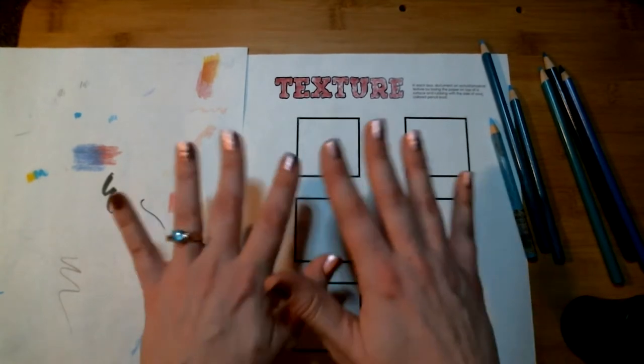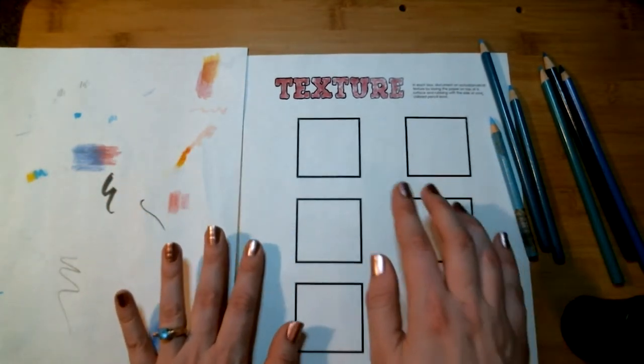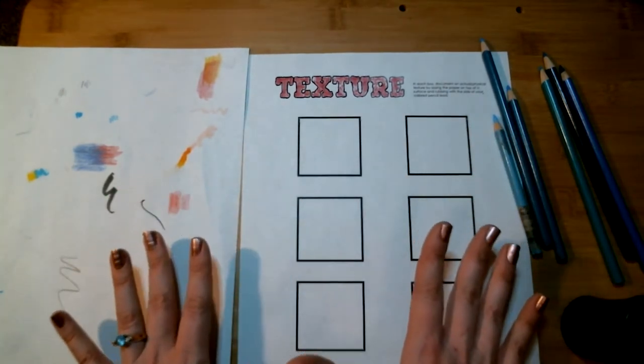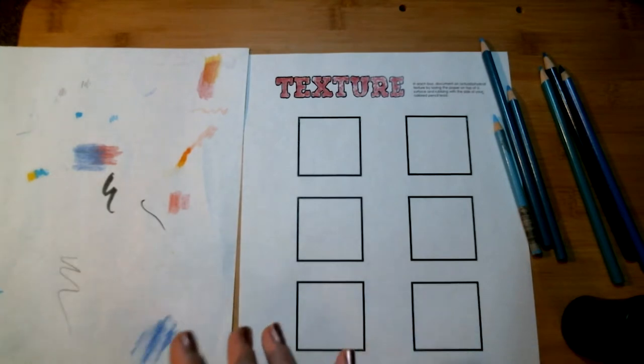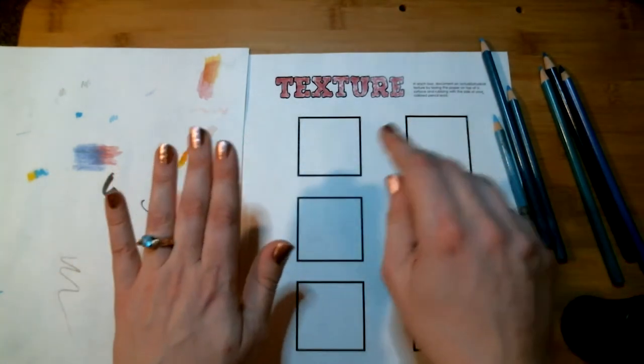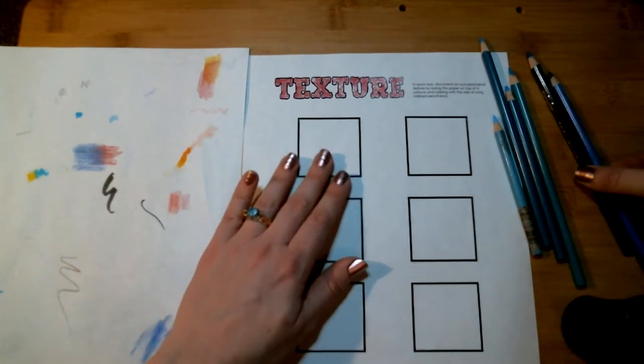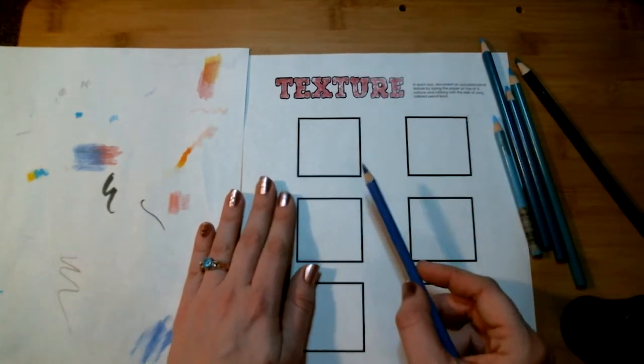You're going to go out into the world and find six individual examples of unique, distinct textures. You're going to take those textures and create rubbings of them by placing them underneath your sheet of paper and then going over it with a colored pencil.